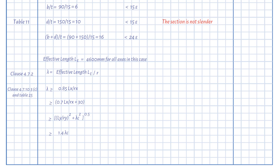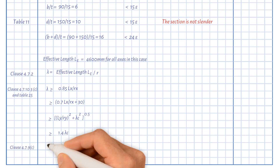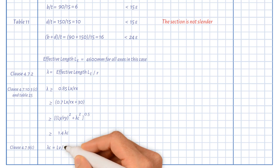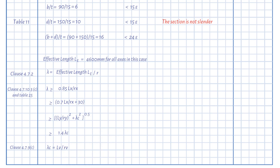Lx and Ly are taken as the length L between the intersections of the centroidal axes or the setting-out lines of the bolts. For double angles connected to both sides of a gusset or member by a single bolt in each angle, the compression resistance should be taken as 80% of that for an axially loaded member with the same slenderness. Lambda_c equals Lv over rv, but not greater than 50.